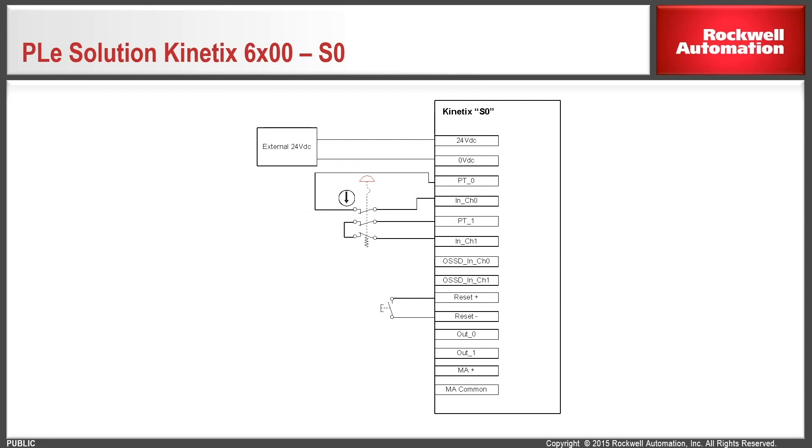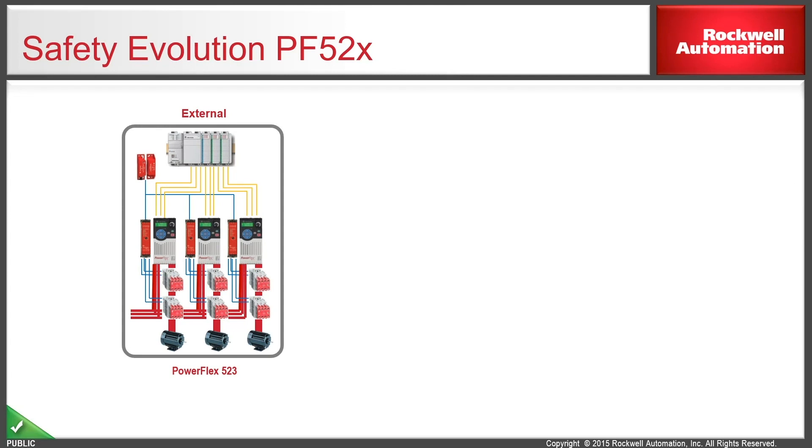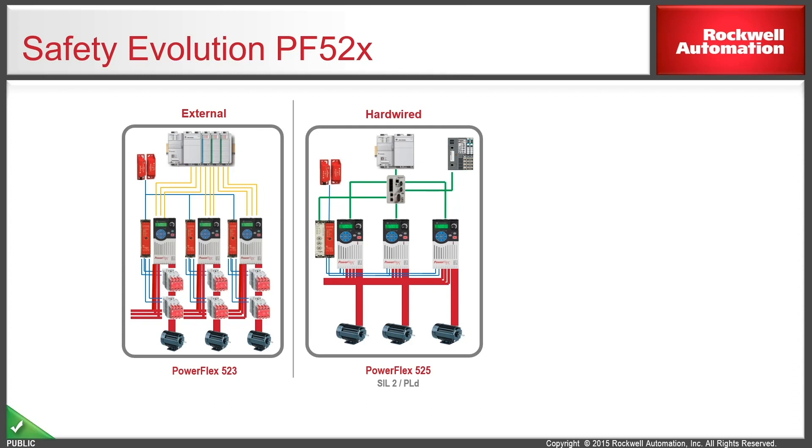With some of the newer safe torque off functionality built into drives, you still had some hardwired inputs, but it definitely was a much cleaner system. You're now basically just disabling the output circuits of the drives in a safe manner, and you're also able to cascade multiple drives together to achieve safe torque off capability. The same thing can be said for the PowerFlex 5.2x family of drives. If you take a look at how safety was implemented in the 5.23, you basically had contactors again between the drive and the motor. The 5.25 came out with hardwired safe torque off, so that functionality eliminated the need for the contactors. And then now with the advent of the 5.27, that's all done over the ethernet network, so there's no need for the safety relays and the hardware into the drive. It's all done in the safety PLC through the manipulation of tags.